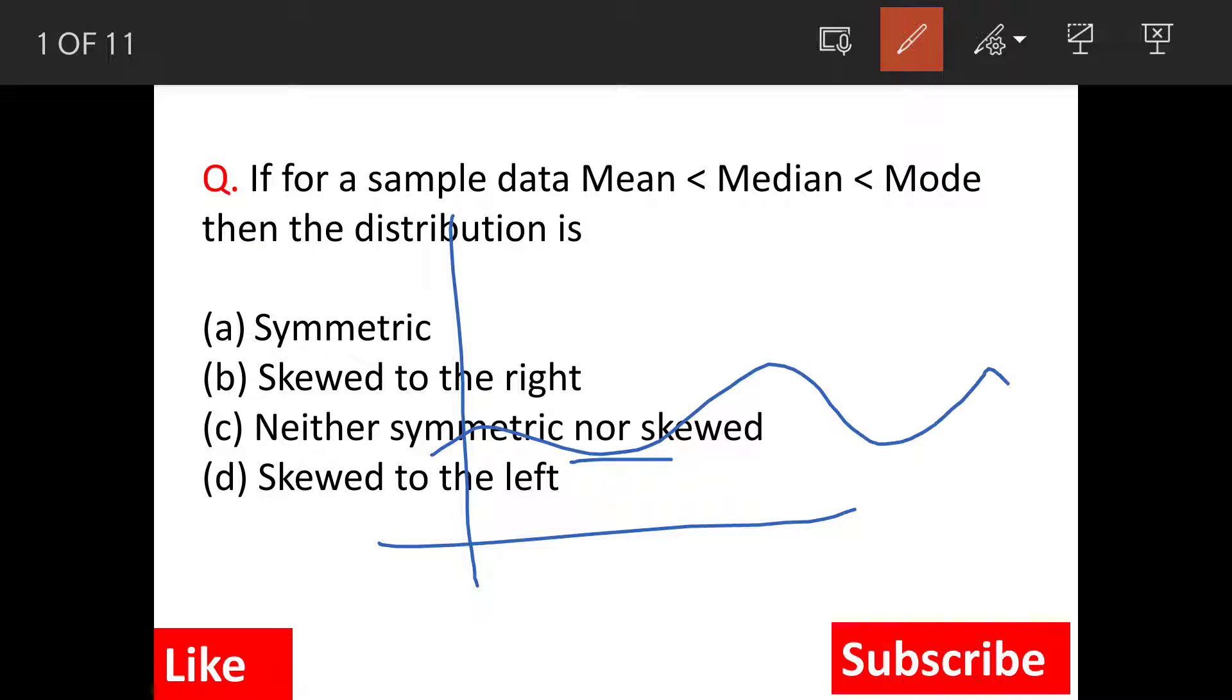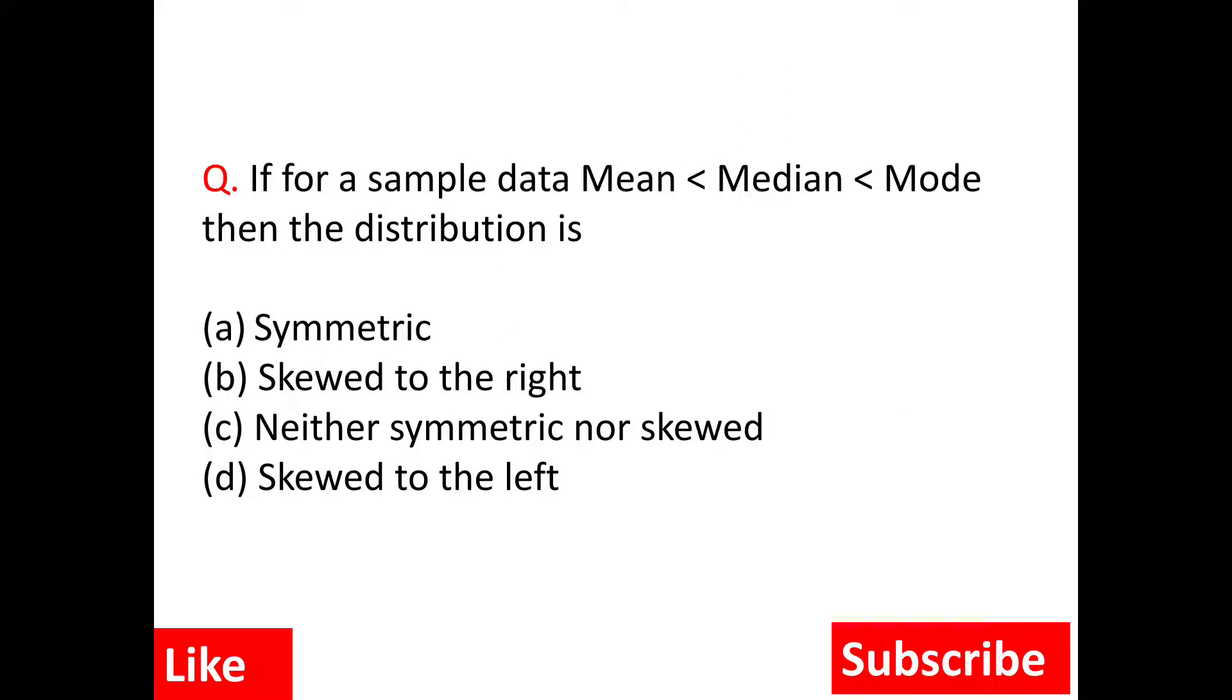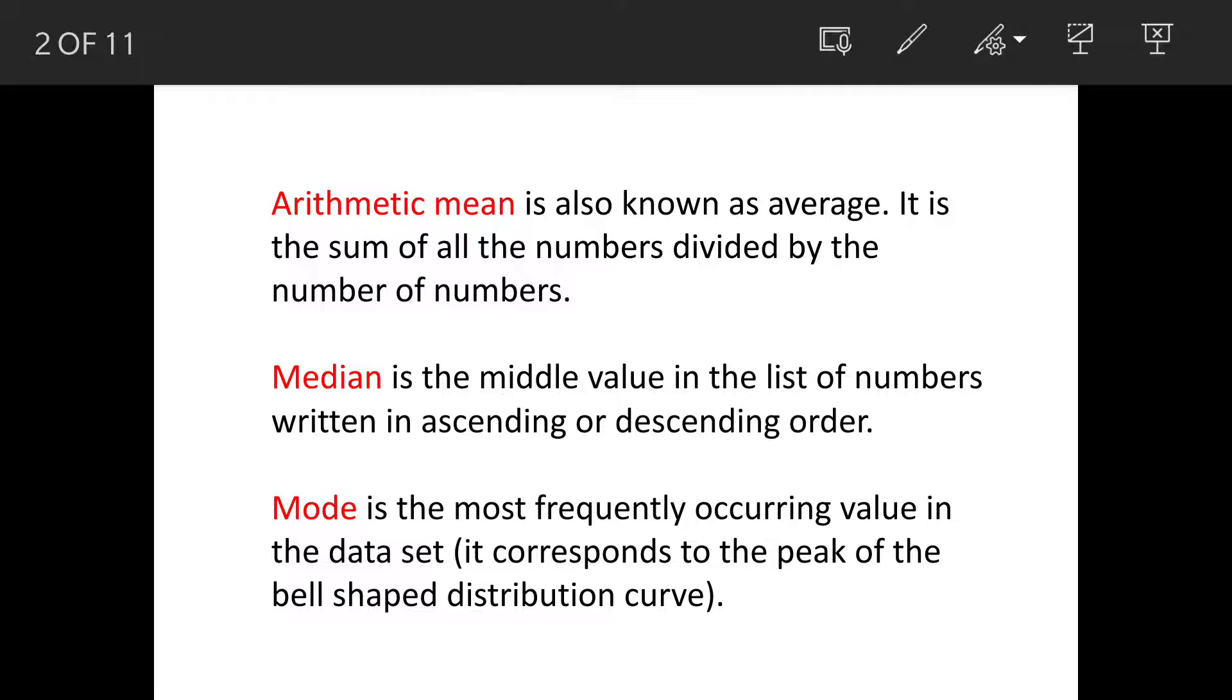It is something like this flat curve. Then terminology: mean is nothing but the average of the numbers. Median is actually the middle numbers of the data. Then mode is the number which is occurring most frequently.